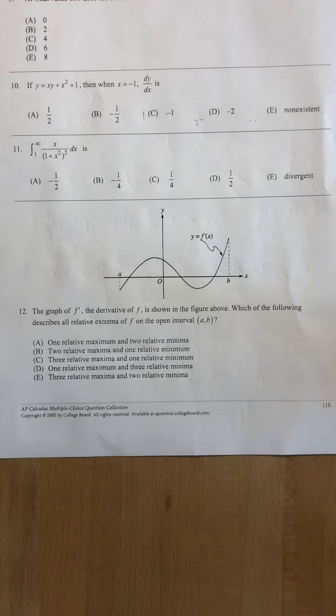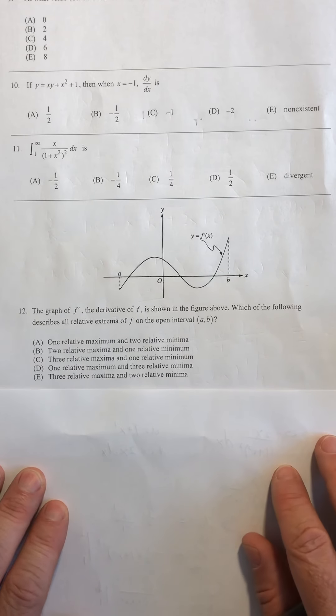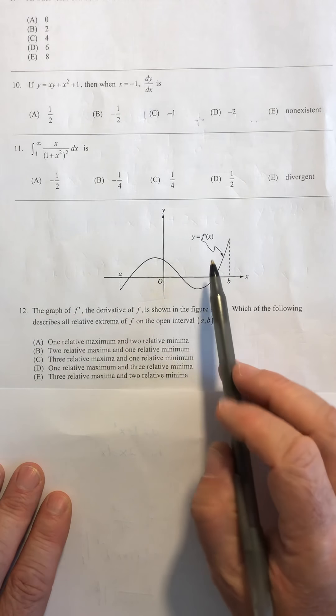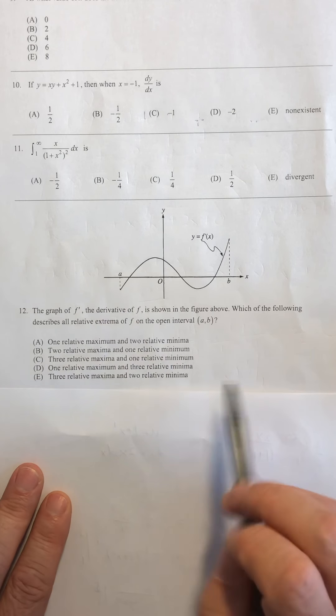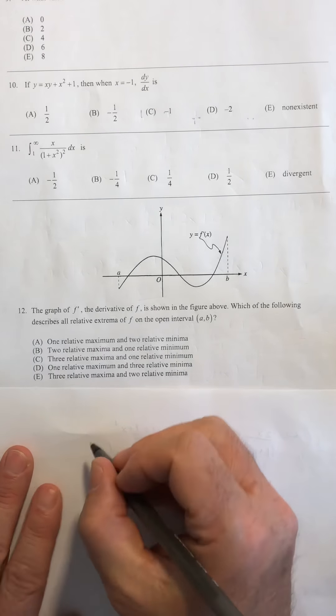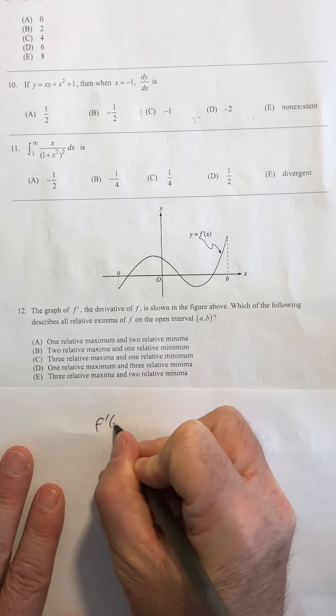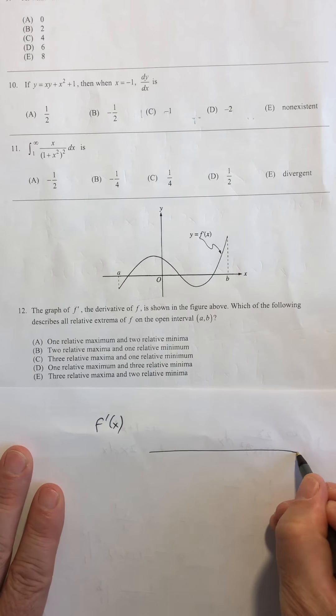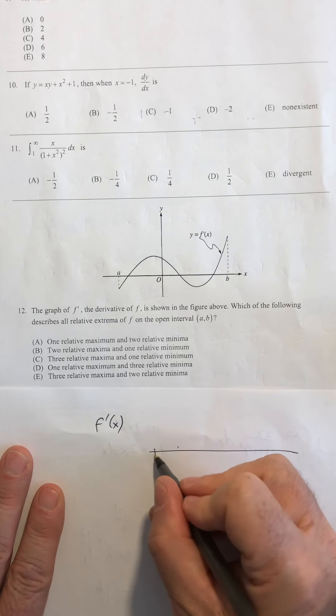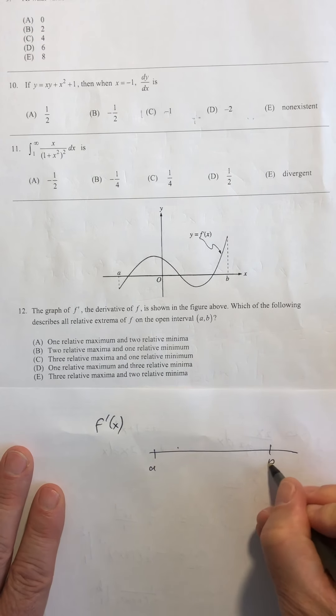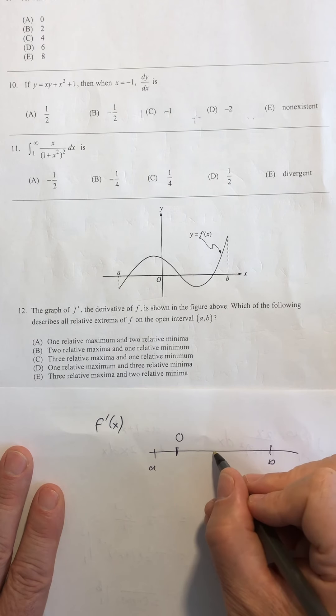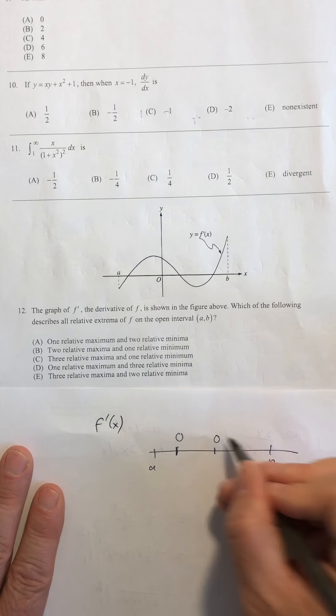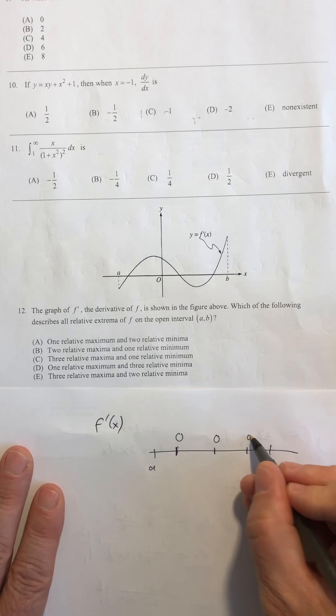And 12 is our last problem on this page. Once again, we have a graph of a derivative. The question is, what are the extrema? What do I know about the extrema? So I'm going to do the analysis here for f prime, writing out the critical numbers. So there's 1, here's a, and here's b. There's a critical number here where the derivative is going to be 0. There's a critical number here where the derivative is going to be 0, and there's another one here where the derivative is going to be 0.